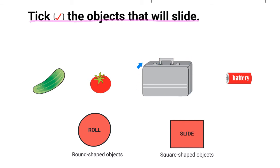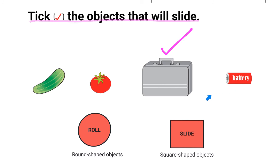Now take the objects that will slide. A round shaped object? No. This suitcase is a square shaped object, which means it will slide. Look at this battery — is this battery square shaped? No. A battery is round, and round shaped objects roll, so I will not tick mark the battery.